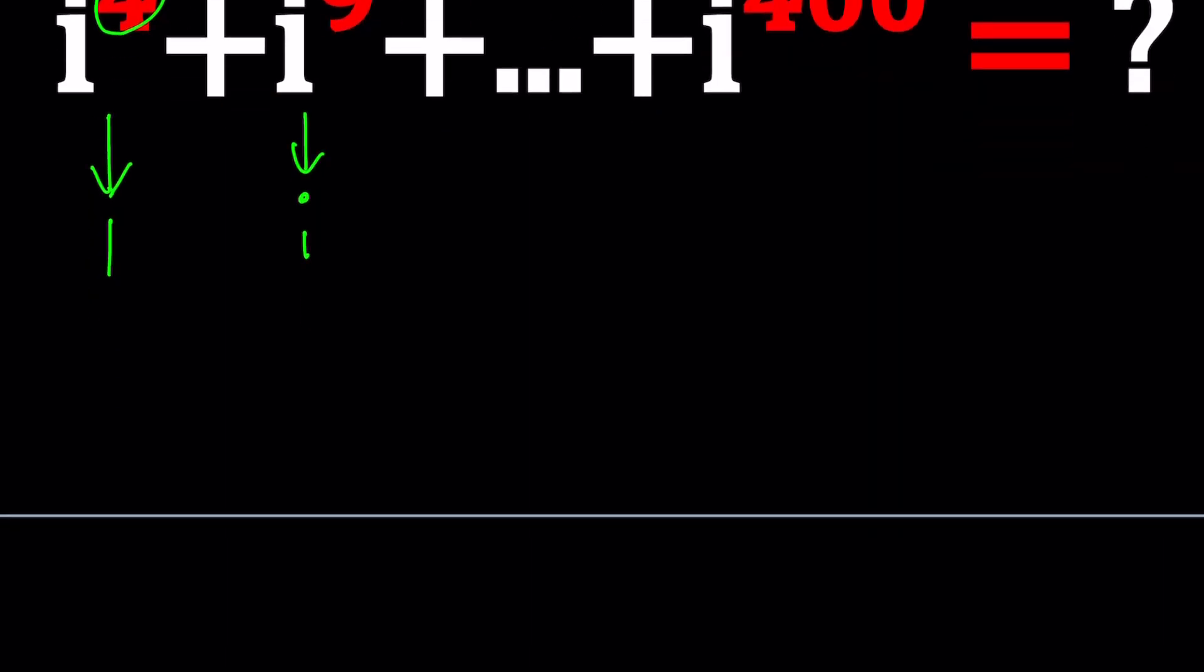So here's what I'm going to do. With consecutive powers of i, if you remember, that was kind of easy because that gave us a cycle. This gave us negative 1. This gave us negative i, so on and so forth. So every consecutive four terms add up to 0.